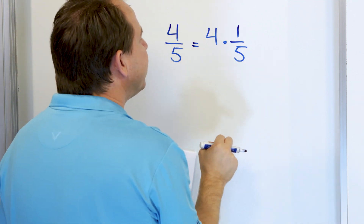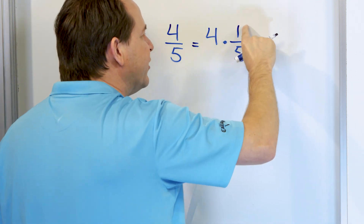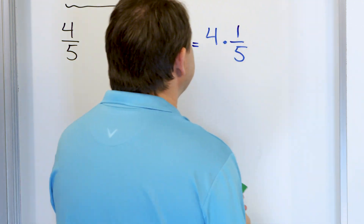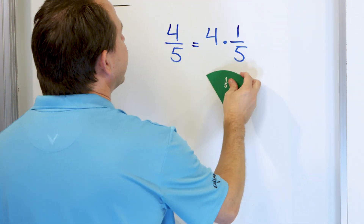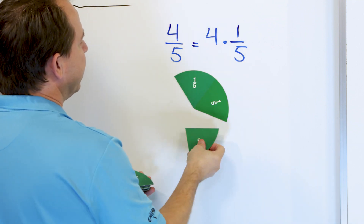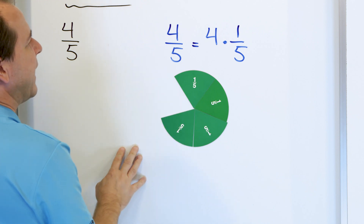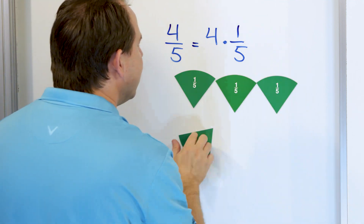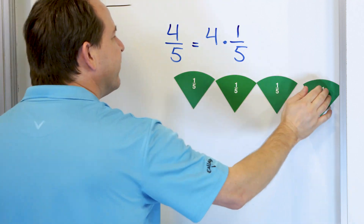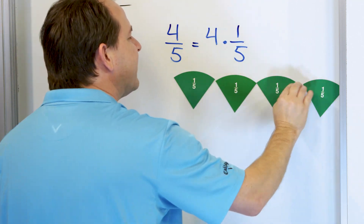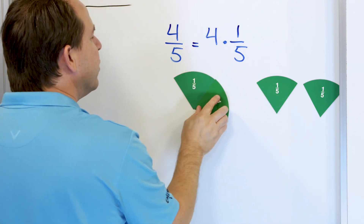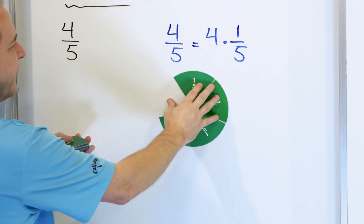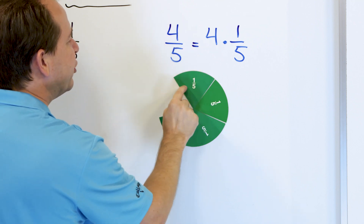We can take the fraction 1/5th and multiply it times 4, because that's what we're doing — we have 1/5th and we replicate it, multiply it times 4, and that's what 4/5ths is. Here we have the fraction 4/5ths: 1/5th, 2/5ths, 3/5ths, 4/5ths. That's the same thing as taking the fraction 1/5th and multiplying it times 4. Whether you spread it out or put it into a circle, it's the same thing. 4/5ths is 1/5th times 4.